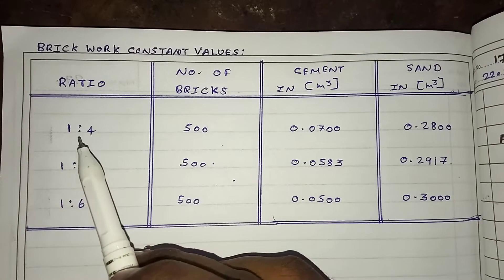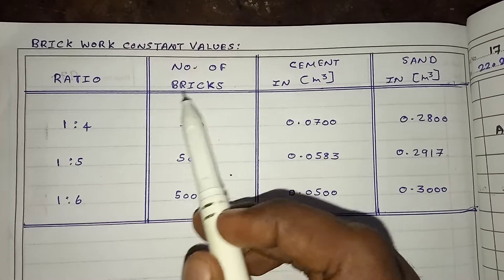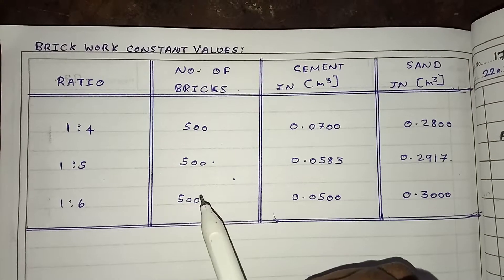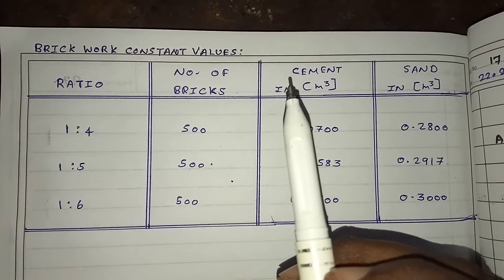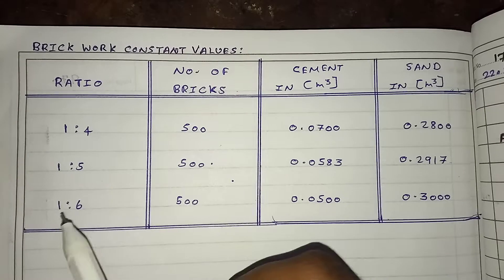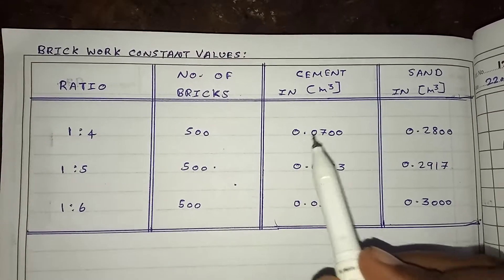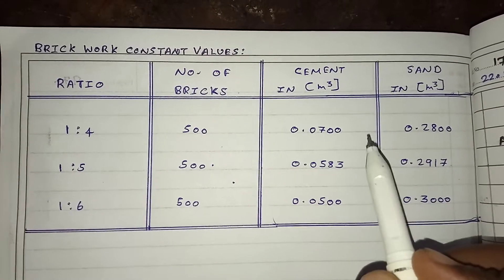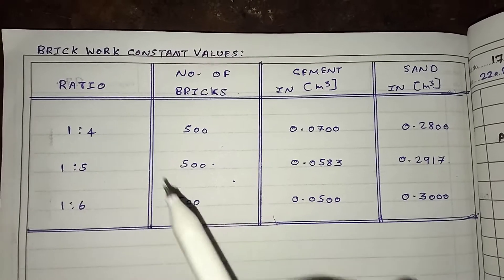First, let's look at the 1 is to 4 ratio. The number of bricks is constant for all ratios — 1 meter cube is equal to 500 bricks. So across all ratios of brickwork, the number of bricks remains constant. Only the cement and sand values differ depending upon the ratio of mortar.